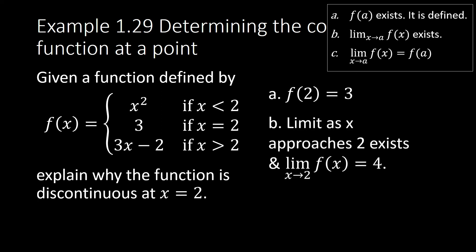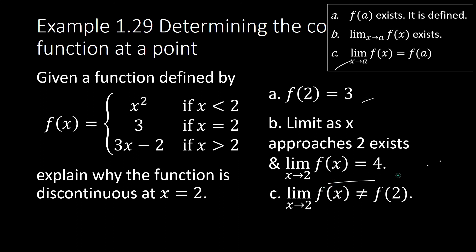We must now check the third condition: is the limit of our function as x approaches 2 equal to f(2)? Well, they are not equal. f(2) = 3, but the limit of the function as x approaches 2 is 4. Conclusion: the function is not continuous when x = 2.